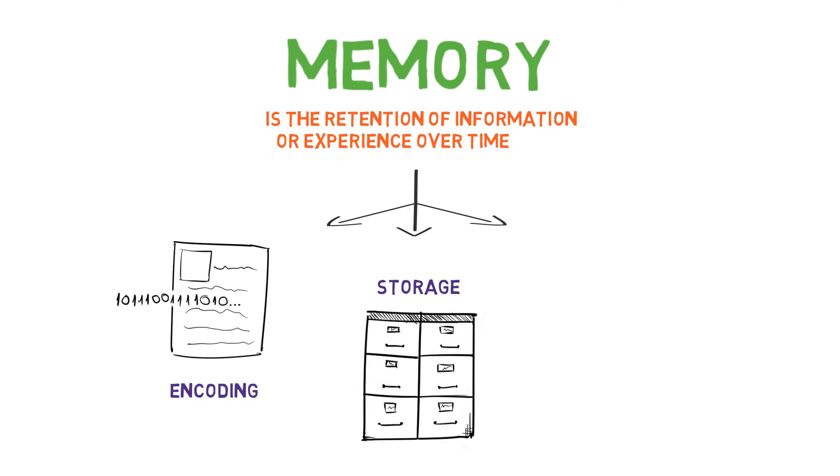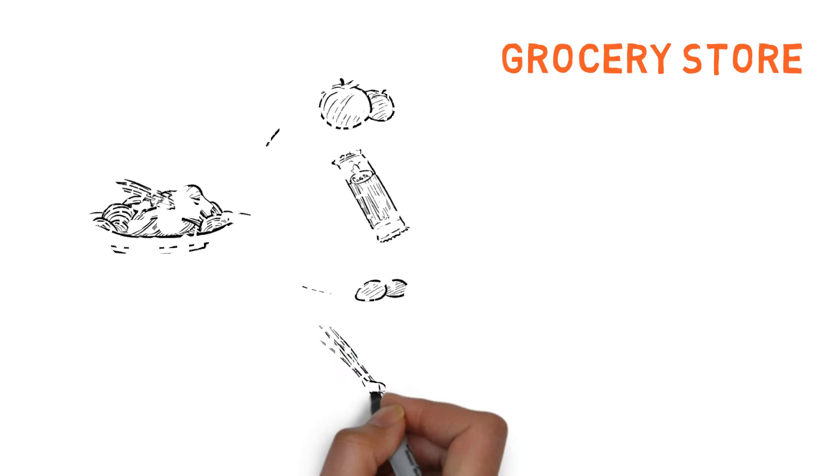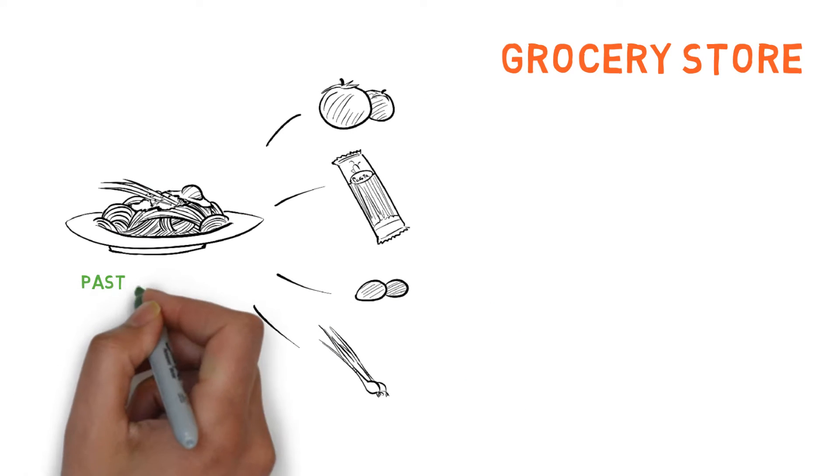encoding, storage, and retrieval. Now imagine you are going to the grocery store to grab a dozen eggs, some tomatoes, herbs, and some noodles to make pasta for dinner.